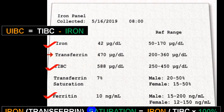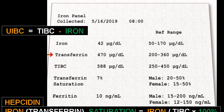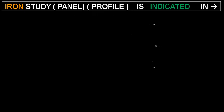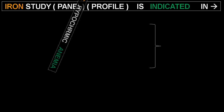Iron saturation is calculated as iron divided by TIBC multiplied by 100. There is one additional test called hepcidin, which is very important to differentiate hemochromatosis — iron overload, which can be genetic or from other mechanisms — from other conditions. The iron panel is indicated any time you order a CBC and find microcytic hypochromic anemia; ideally you should also ask for an iron profile.